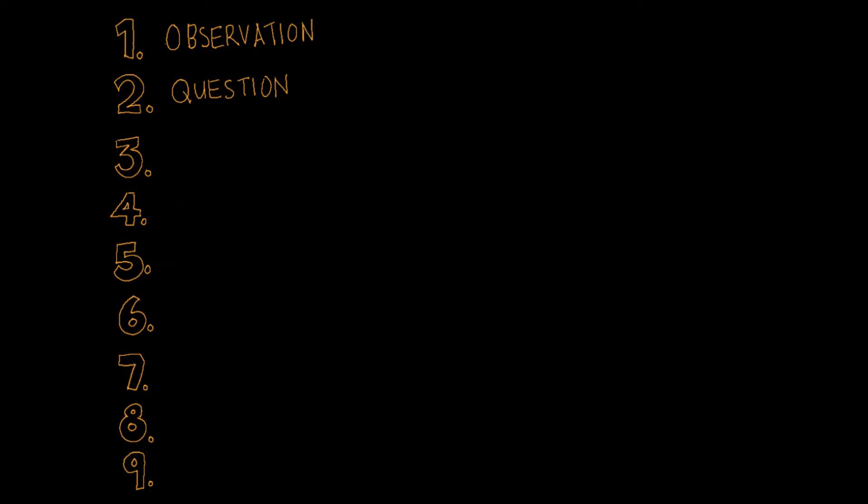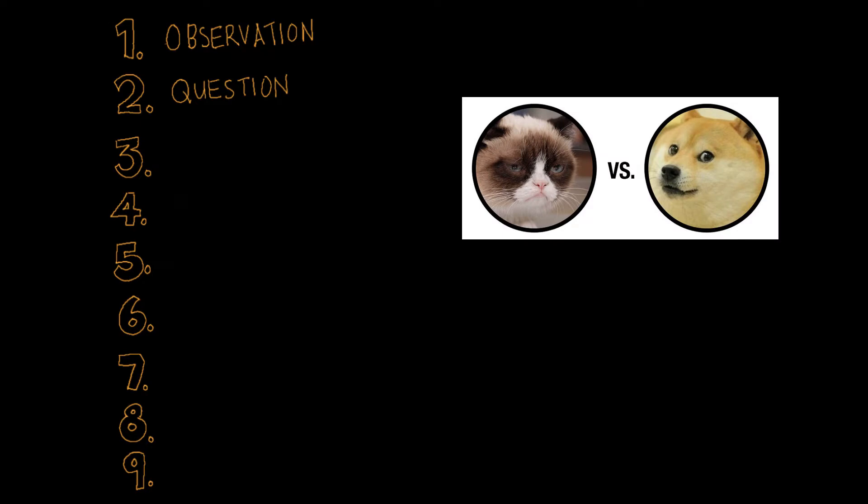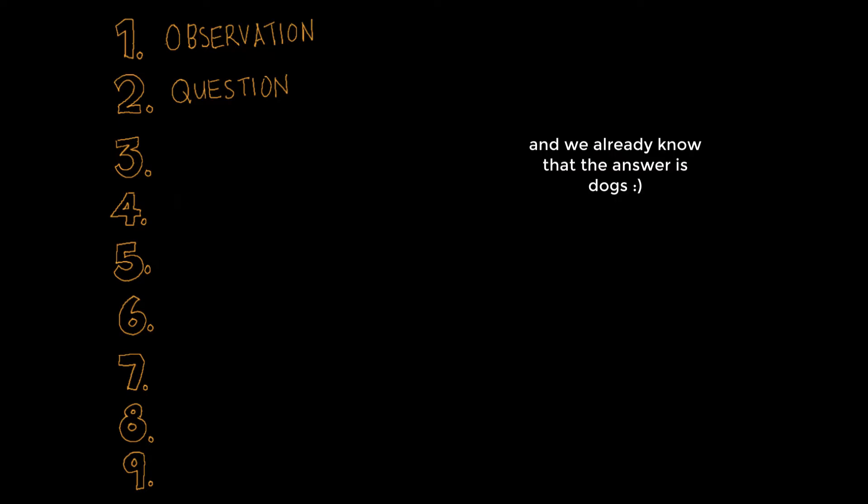Observation leads to a question and that question needs to be something that we can test. It can't be something like what's better, cats or dogs. We can't test things like that with science because it's very hard to collect the data. When you're doing scientific experiments, start with a simple question.